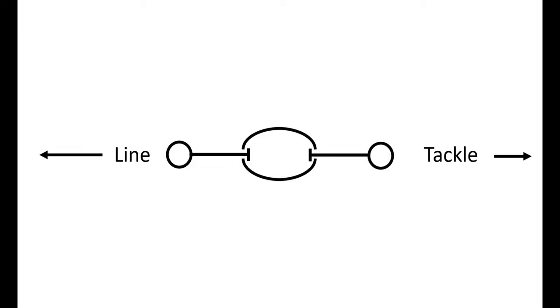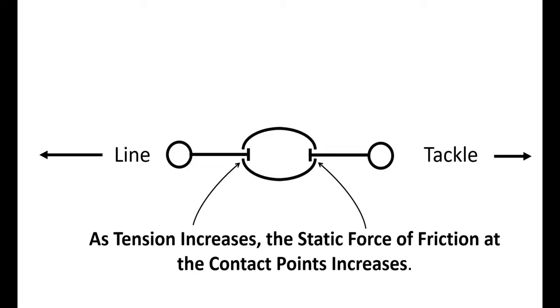As tension is increased from your tackle and line on the ends of the swivel, there is a frictional force created at the contact points between the stub ends of the swivel and the barrel itself. When a rotational force is then applied to the tackle end of the line, eventually it will overcome that frictional force, and the tackle will be allowed to turn without twisting your main line.